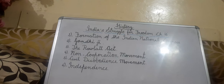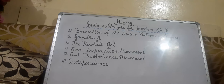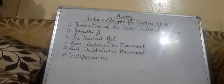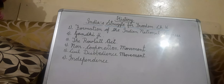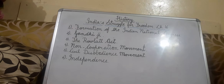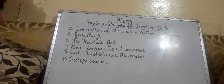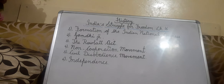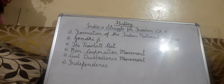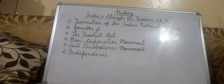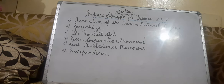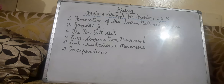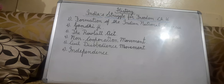Gandhiji decided to protest against this law through peaceful satyagraha. Satyagraha means peacefully standing up for the truth. A large meeting was held at Jallianwala Bagh in Amritsar. The Bagh had high walls and only one narrow entrance. The British ordered their troops to fire on the unarmed crowd and the people had no way to escape. Thousands of people died in the Jallianwala Bagh massacre.